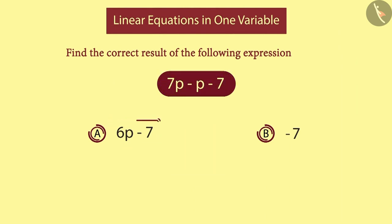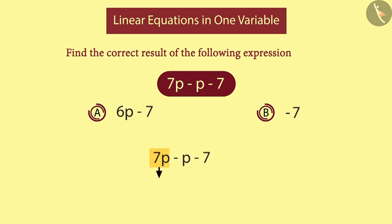Let us first have a look at option A. We know that the figure 7P is actually 7 times P. Similarly, here, P can be written as 1P. So, in this expression, we can easily apply the distributive property. When we do this, we can consider P being always present and write its coefficient as 7 minus 1.